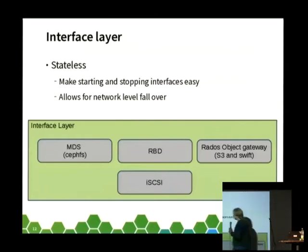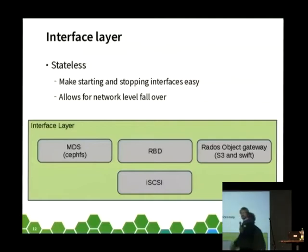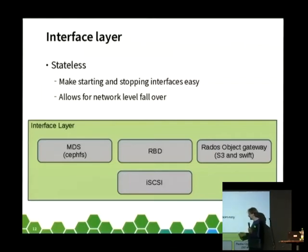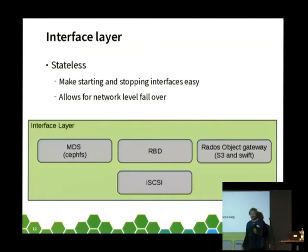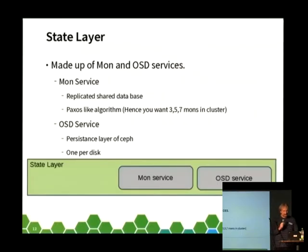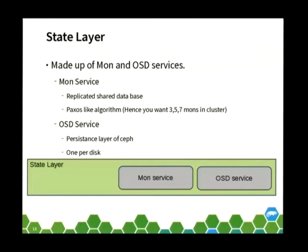Then we have an interface layer, and this is really neat — it's stateless. That means you can rip one out and put another one in and replace them. It means you can put your reliability, with iSCSI, built into the protocol — there's a failover back end. And that allows you to bring up and bring down services much more easily. Then we get to the state layer, and this is where things start to get a little bit more complicated.